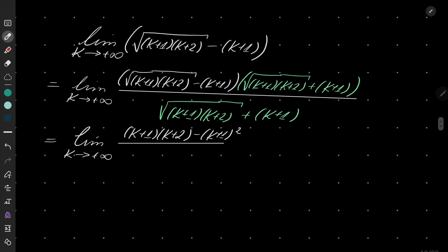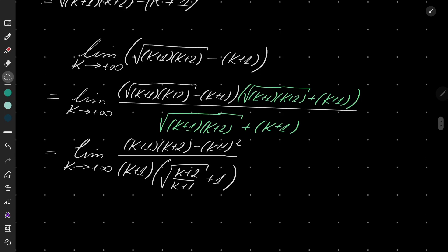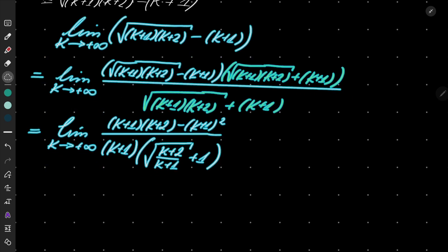And in the denominator, I can factor out K plus 1. And after factoring out K plus 1, I will be left with square root of (K+2)/(K+1) plus 1. I'm getting out of space, so I will move it a little bit higher.